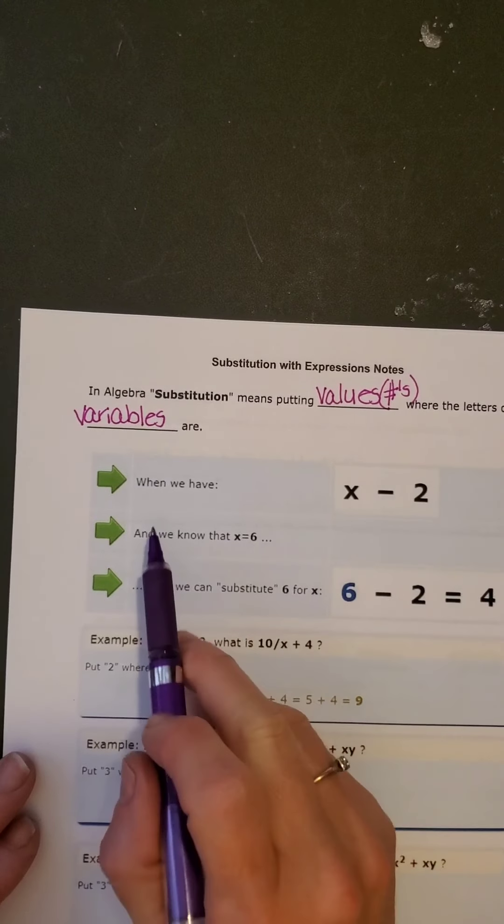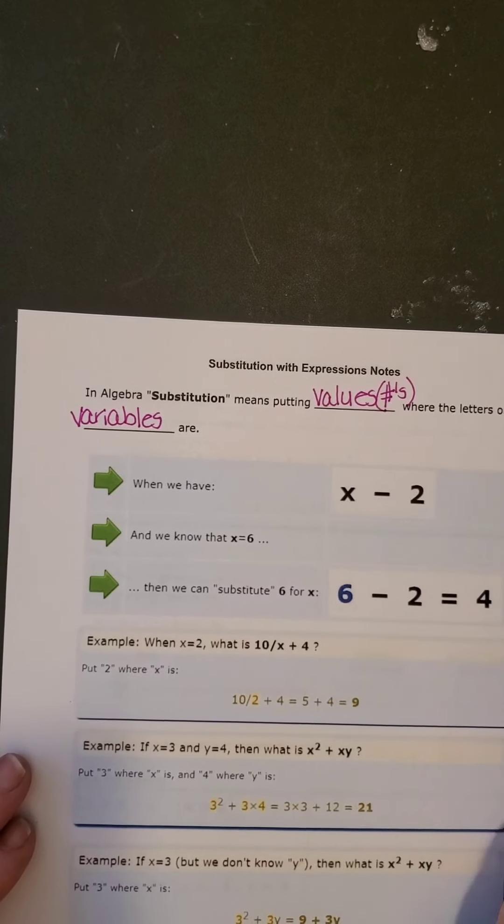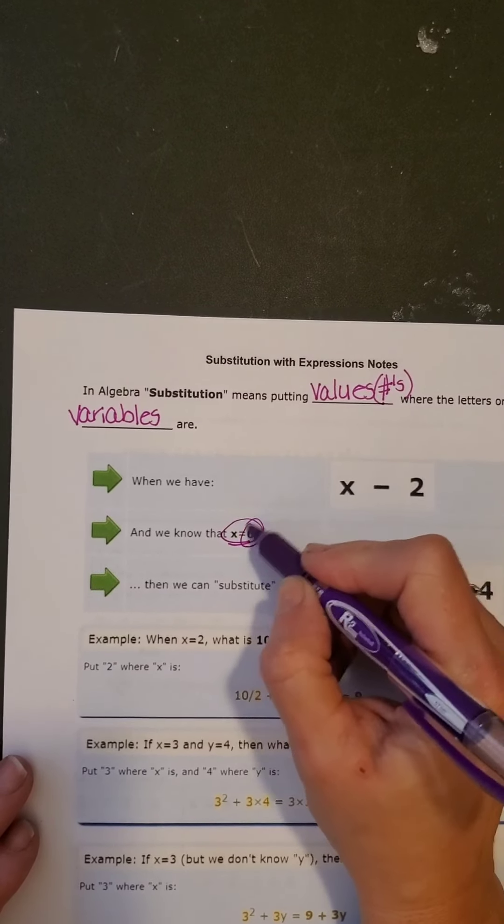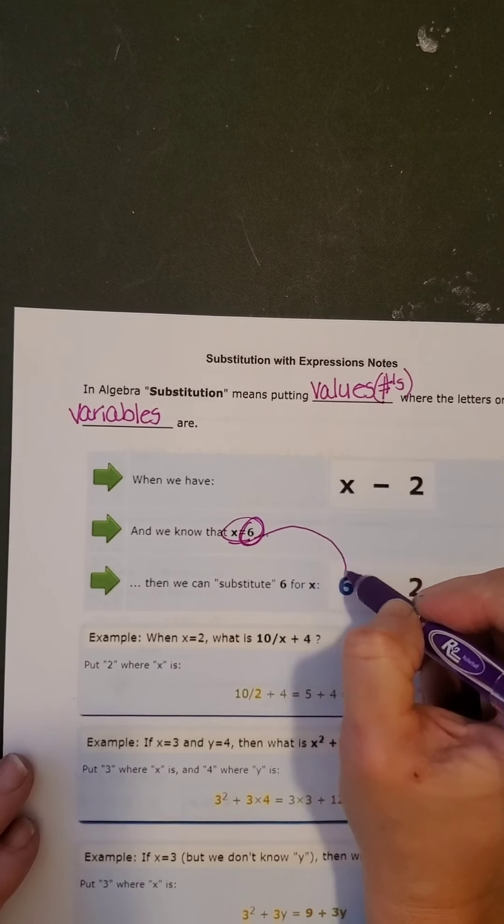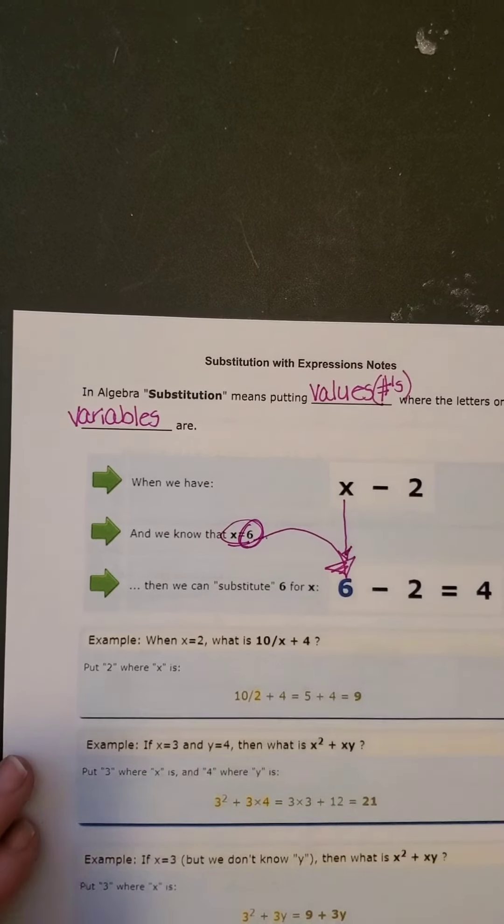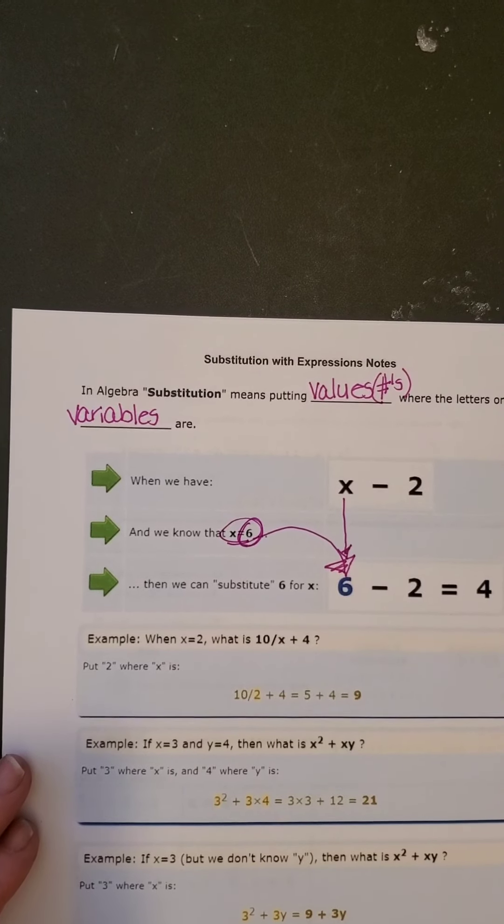So if we look at this one, when we have x minus 2 and we know that x is equal to 6, then we are going to take that 6 and put it in right here for x. So we are just substituting that in.